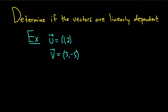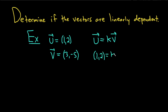Two vectors are linearly dependent if they are multiples of each other. So let's force them to be multiples and see if we come up with a solution. Let's let u equal k times v, where k is a scalar — this is what it means for them to be multiples. So u is (1, 2) and we have k times (3, negative 5). Distributing the k through scalar multiplication gives us (3k, negative 5k).